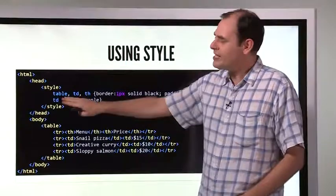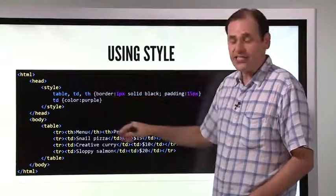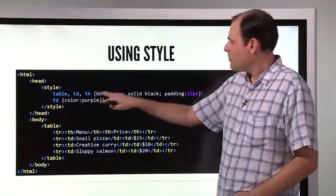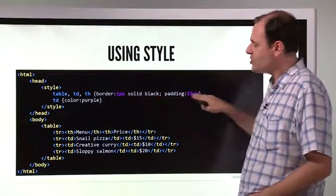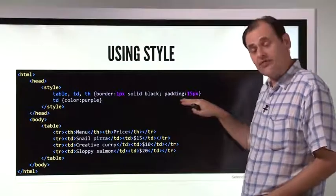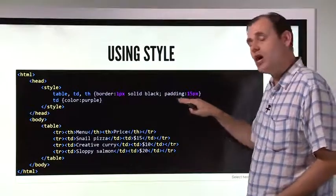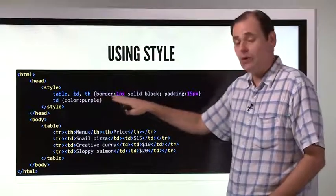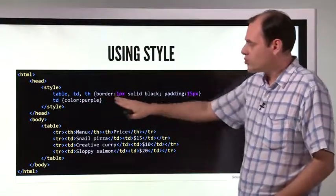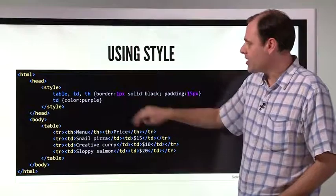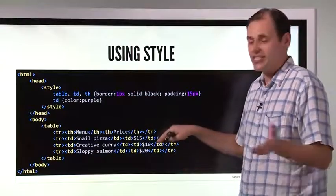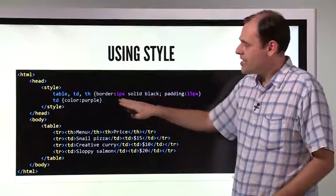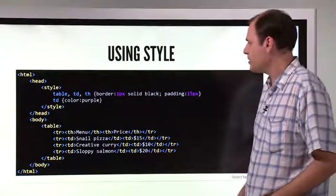We're saying every table, every table data little box, and every table header box as well, they will all be shown using these style rules. Padding, which is a little bit of spacing, because the last example was very crowded. And also, we'd like to see a line around all those boxes. That's called a border, and that's how thick the line is, and it's a solid line instead of a dotted line, and it's going to be a black line. Those three are applied to the border property.